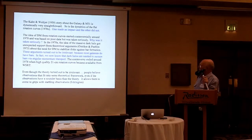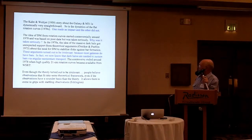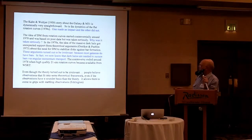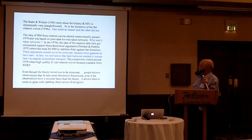It was based on early data and taken seriously. Why was it taken seriously? I think the reason is that in the 1970s the idea of a massive dark halo got unexpected support from theoretical arguments about the need for dark matter to stabilize disks against bar formation. These arguments turned out to be irrelevant because most galaxies do have bars — in fact we now know dark halos are needed to sustain bars through angular momentum transport. But there was a theoretical framework within which people could interpret dark matter. The controversy ended around 1978 when high-quality 21-centimetre curves became available from the Dutch radio telescope. Even though the theory turned out to be irrelevant, observations that fit into a theoretical framework allow people to engage with new observational results.